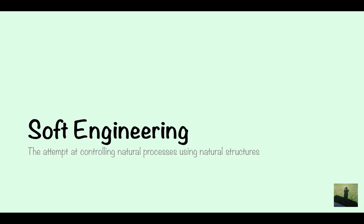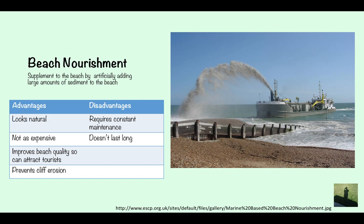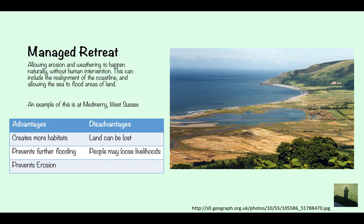Soft engineering is the attempt at controlling natural processes using natural structures. Beach nourishment, as you can see here, is supplementing the beach by artificially adding large amounts of sediment — shingle, sand, or pebbles — back onto the beach. Advantages: it looks natural, it's not as expensive as hard engineering options, it improves beach quality to attract tourists, and it prevents cliff erosion. Disadvantages: it requires constant maintenance, doesn't last long — only a couple of months before the sediment is transported away by longshore drift.